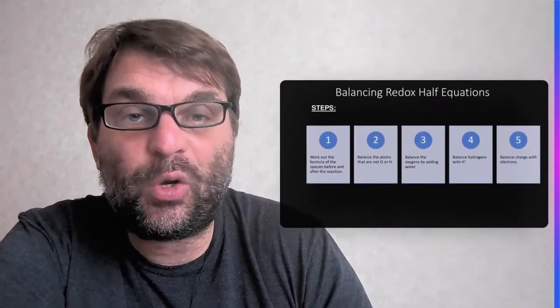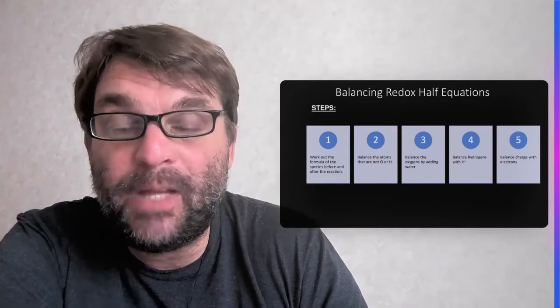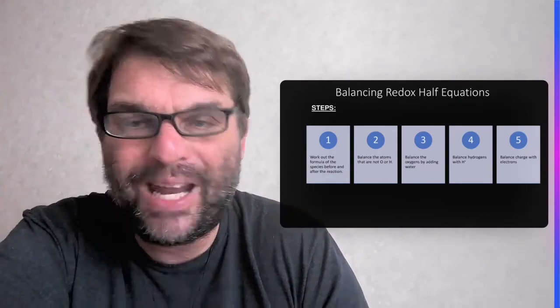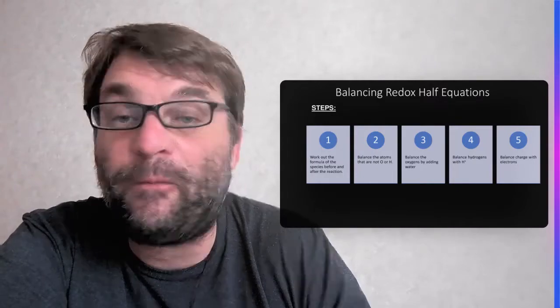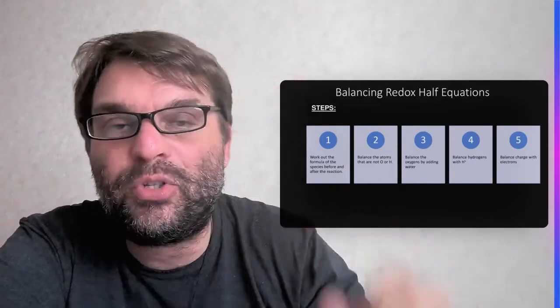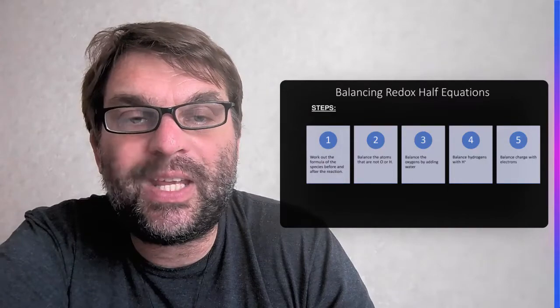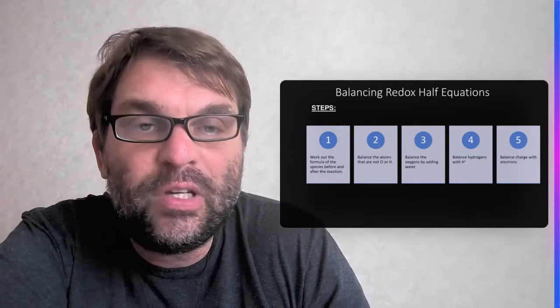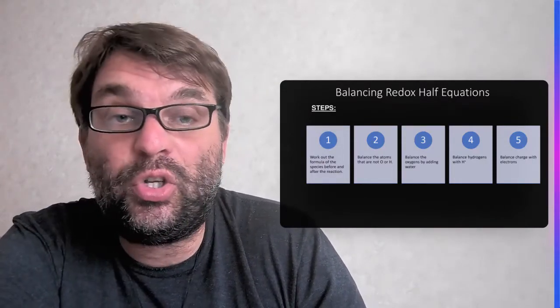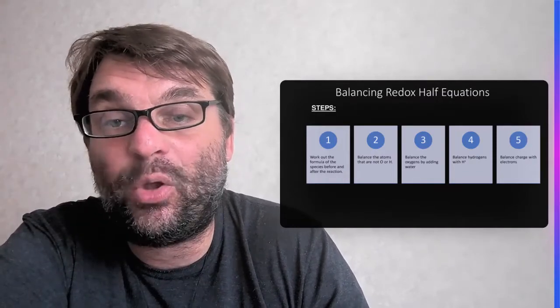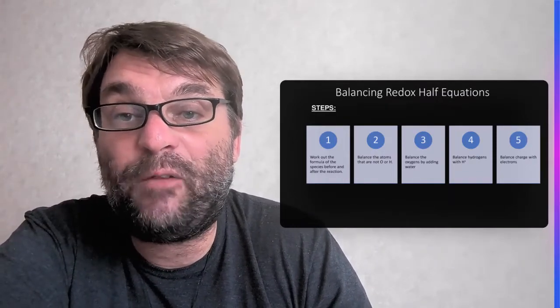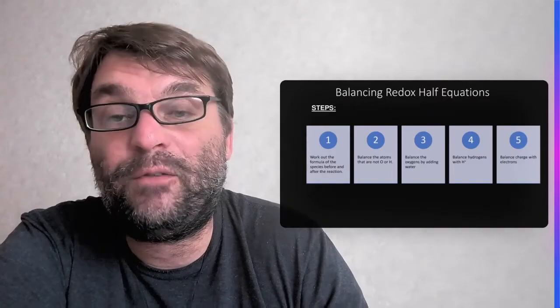So in terms of balancing redox half equations, there are five steps, and we're going to go through a few examples to give you some practice. The first one is you've got to work out the formula for the species before and after the reaction, what happens to it. Then balance the atoms that are not oxygen and hydrogen. Then we balance those oxygens with adding water. And of course, all these steps are not necessarily the same for every reaction. Sometimes you don't have to use some of these steps.